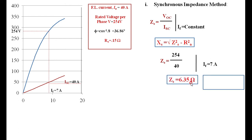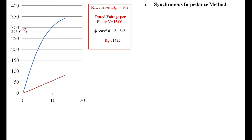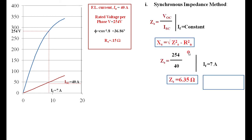Zs = 254 / 40 = 6.35 ohm. For the rated voltage, project on the OCC, note the field current (7 A), then find the short circuit current for the same field current (40 A), giving Zs = 6.35 ohm. The synchronous reactance Xs is calculated as √(Zs² − Ra²) = √(6.35² − 0.15²) = 6.348 ohm.